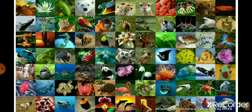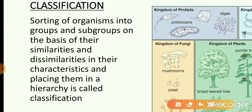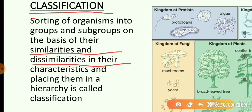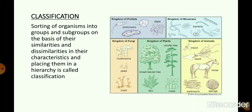To make our study easy and systematic, scientists suggested sorting organisms into groups and subgroups on the basis of their characteristic features. This sorting of organisms into groups and subgroups on the basis of similarities and dissimilarities — and then placing them in a hierarchy from the largest group to the smallest — is what is called classification.